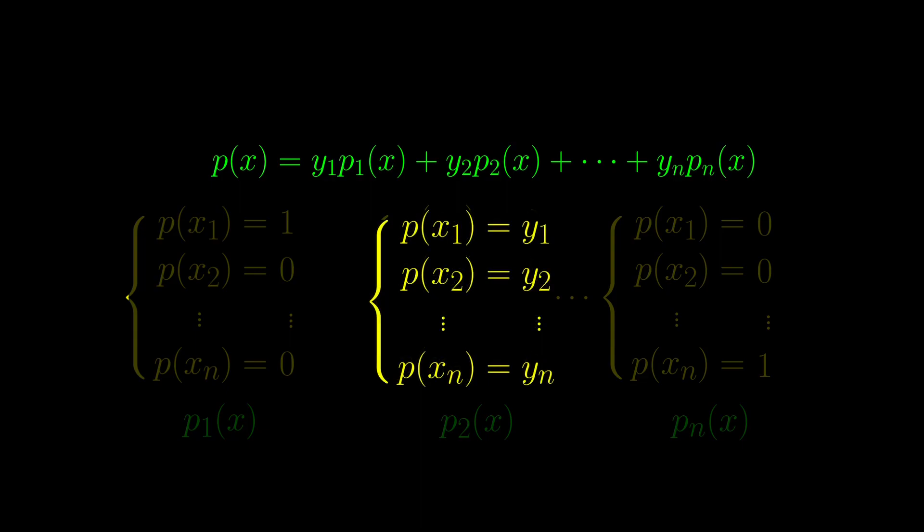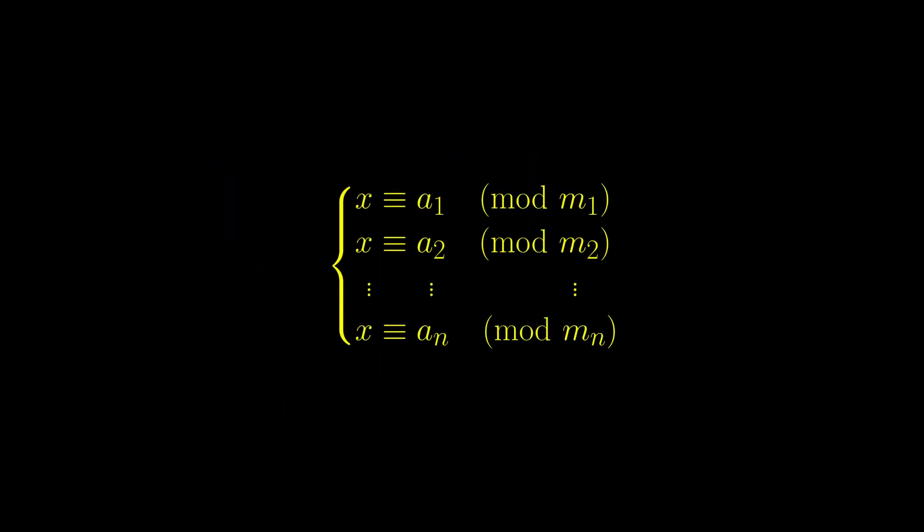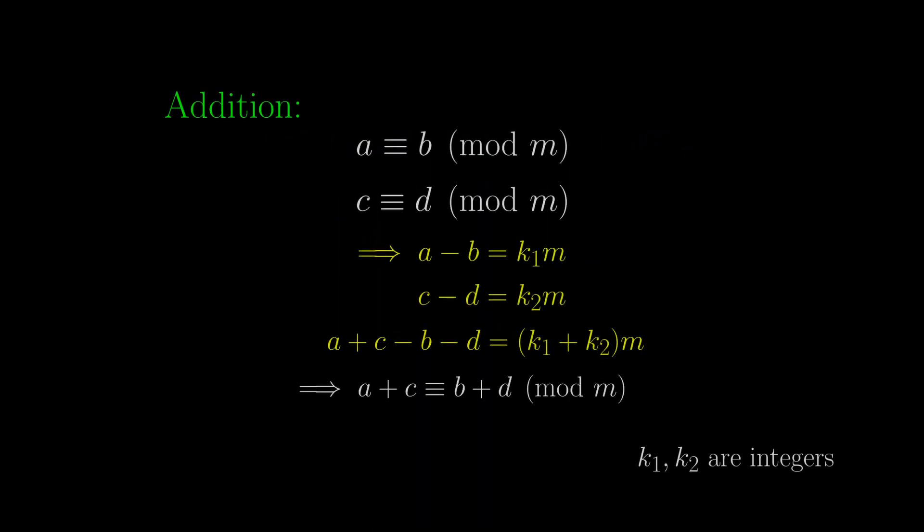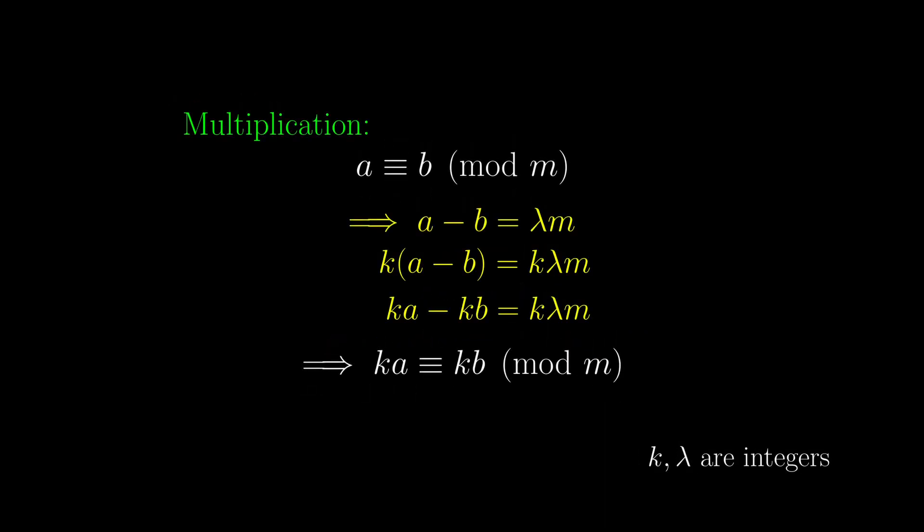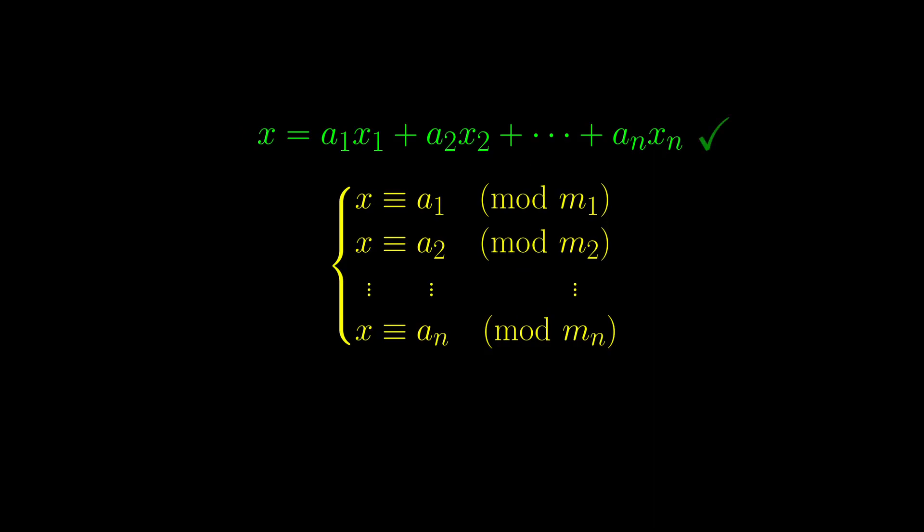So can we pull a similar trick for the ancient Chinese problem? Again, for this complicated case, we split it into smaller cases and solve for them separately. And now we similarly consider the number x defined as a1x1 adding up all the way to anxn. We need to be a little bit careful here, because we are dealing with these congruent signs, not equal signs. Luckily, we have previously demonstrated that you can view them as pretty much the same thing when it comes to addition and multiplication. And so, we have the same valid conclusion that x fulfills the entire system of equations.